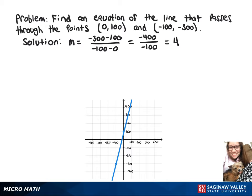So now we can do y minus 100 equals 4 times x minus 0. And after simplifying that, we get the equation y equals 4x plus 100.